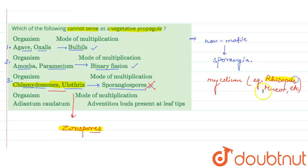We'll also see the fourth option. It is Adiantum caudatum, and the mode of multiplication here is adventitious buds that are present at the leaf tips.